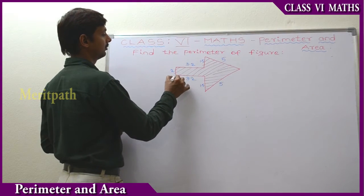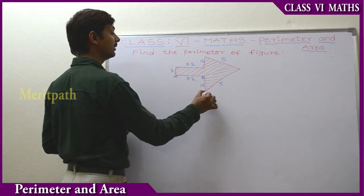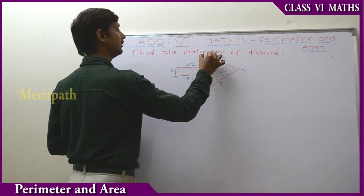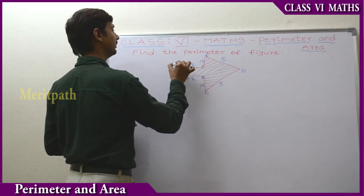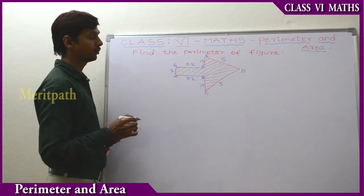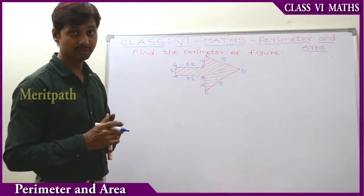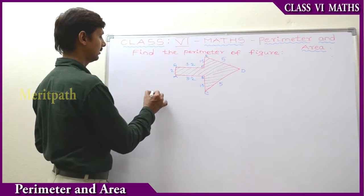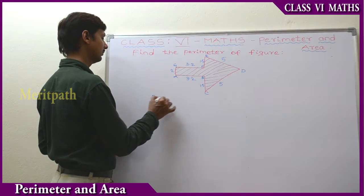For our reference, let's label some sides: A, B, C, D, E, F, G. So when we add all the sides of it, we get the perimeter. So perimeter is equal to AB + BC + CD + DE + EF + FG + GA.